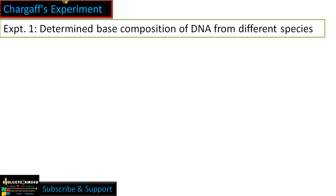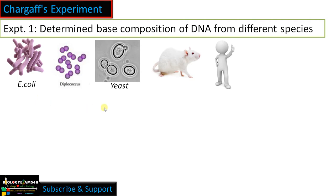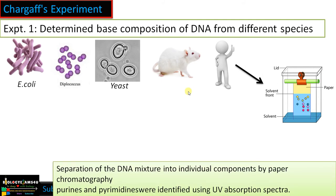For better understanding, let us divide it into two parts. First, he determined the base composition of DNA from different species. He isolated DNA from E. coli, Diplococcus, yeast, humans, and many organisms. He separated the DNA mixture into individual components or bases by paper chromatography, then identified and quantified the nitrogenous bases — purines and pyrimidines — using their UV absorption spectra.